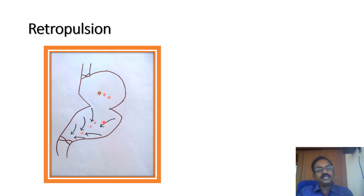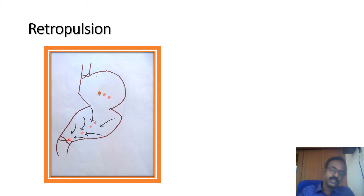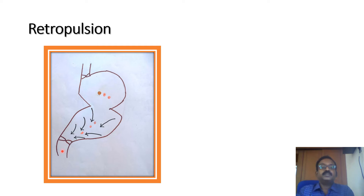The last contraction in gastric emptying is retropulsion, which occurs against the closed pyloric sphincter. The food is reversed to the middle part of the stomach and grinding and mixing occur with the closed pyloric sphincter. Sometimes it opens the pyloric sphincter to allow some amount of food into the duodenum. Like the antral pump, retropulsion is important for the mixing and grinding of food.